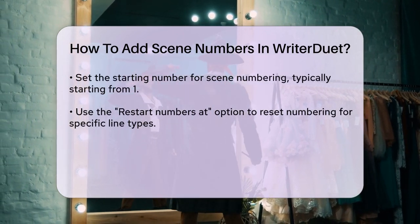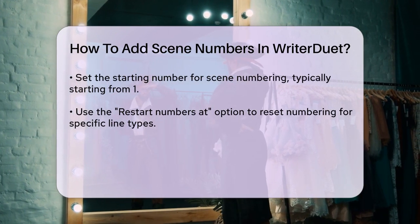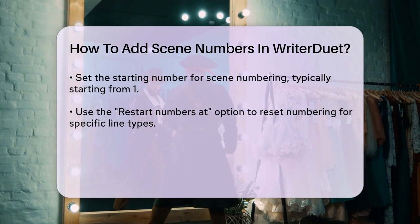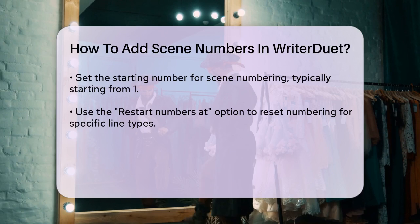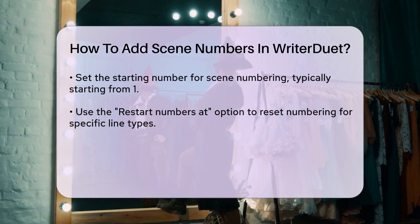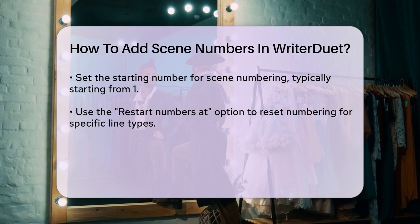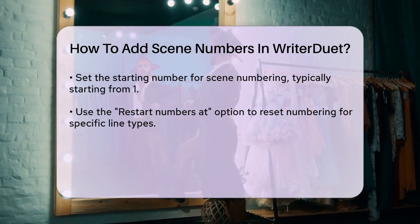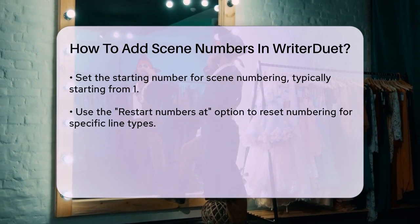You can also include other line types in the same numbering sequence. For example, if you want the scene numbers to restart every time a new character is introduced, you can select Character from the Restart Numbers at drop-down menu. This way, the scene numbering will start fresh each time a new character appears.